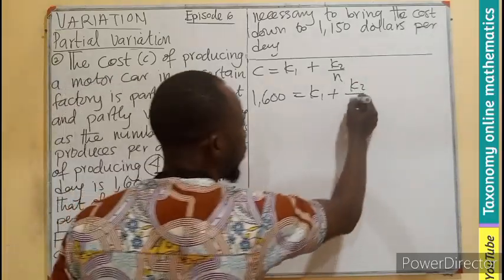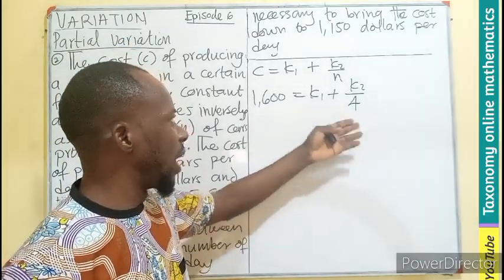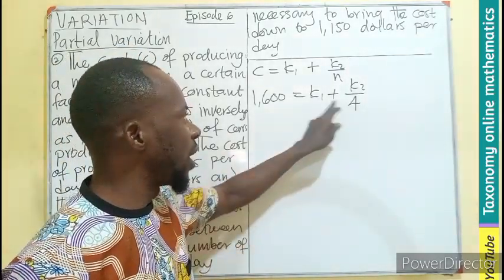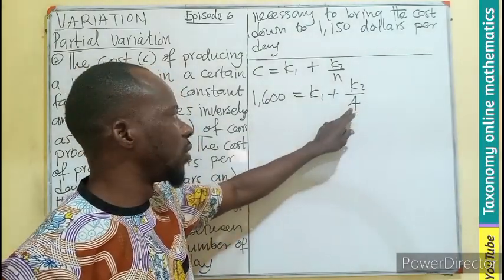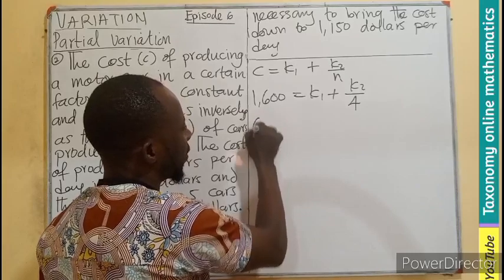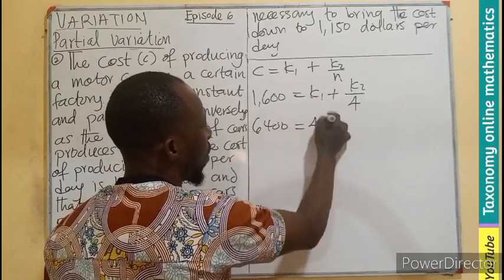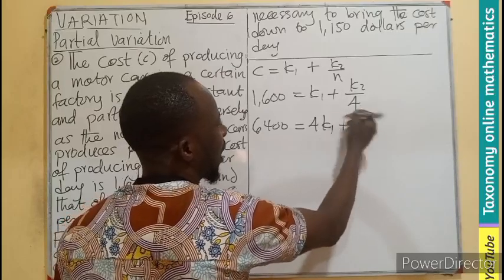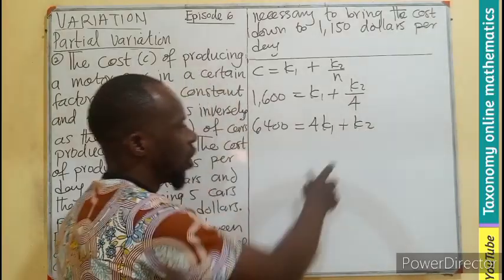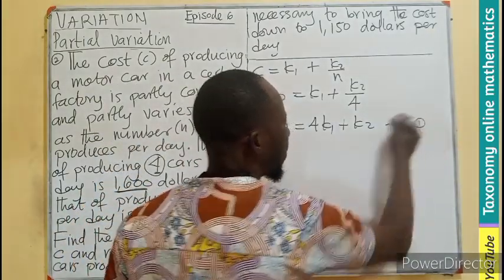Our N is going to be 4. This is a linear equation that involves a fraction. So in order to do this work, we need to multiply each of the terms by 4. If you multiply by 4, you have 6,400 equals 4K1 plus K2. Now we are having a linear equation which we can label this our first equation.